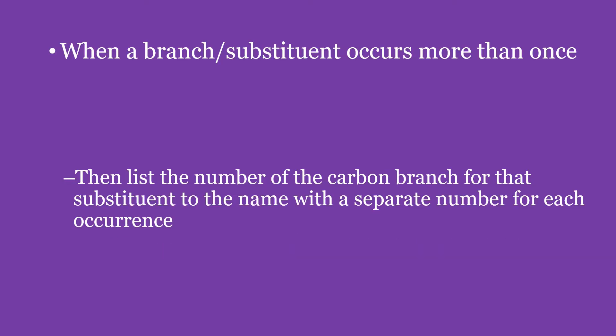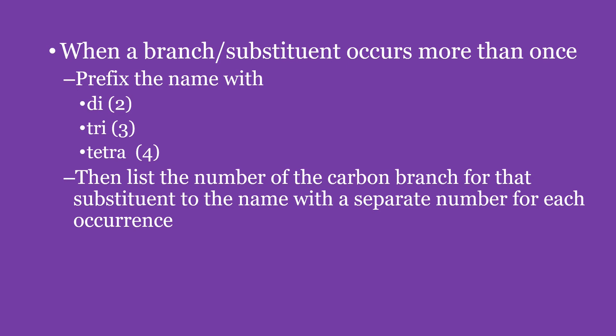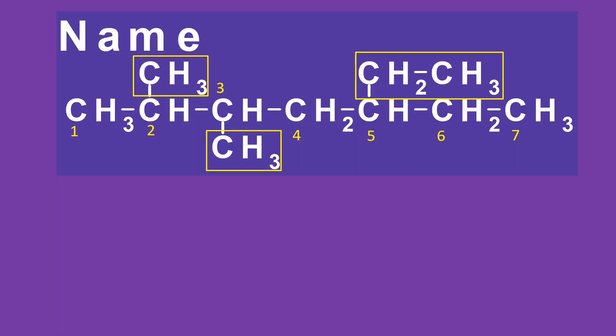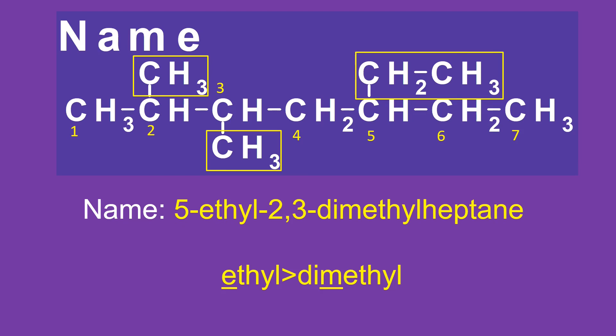When a branch or substituent occurs more than once, prefix the name with di-, tri-, or tetra-, then list the carbon number of each occurrence, separating numbers with commas — for example, 3,4-dimethyl or 4,4,6-triethyl. For our next example, the parent chain is a 7-carbon alkane named heptane. Along the parent chain, there are 3 alkyl groups attached to carbon numbers 2, 3, and 5 — methyls at carbons 2 and 3, and an ethyl at carbon 5. Therefore, the name of the structure is 5-ethyl-2,3-dimethylheptane. Take note that we need to follow alphabetical order in writing the alkyl groups.